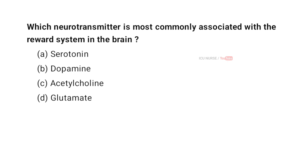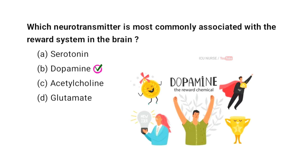Which neurotransmitter is most commonly associated with the reward system in the brain? A. Serotonin, B. Dopamine, C. Acetylcholine, D. Glutamate. And the correct answer is B. Dopamine. Dopamine is a chemical messenger in the brain involved in regulating mood, attention, and pleasure. It is called the reward neurotransmitter because it is released during pleasurable activities, reinforcing behaviors and motivating repetition, helping the brain learn from rewarding experiences.